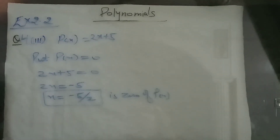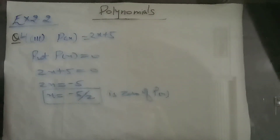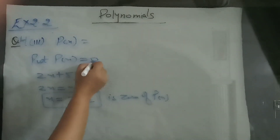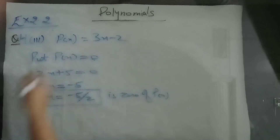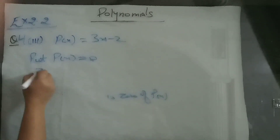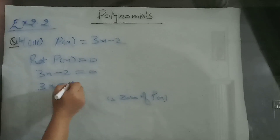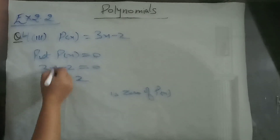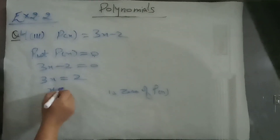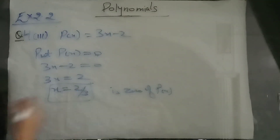Fourth part is p(x) = 3x minus 2. The steps are the same: put 3x minus 2 equal to 0, so 3x equals 2, giving x equal to 2 by 3 as the zero of the polynomial.